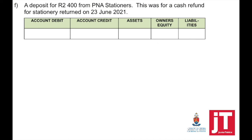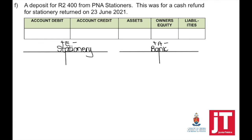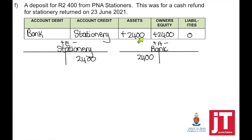Adjustment F — a deposit of $2,400 from P&A Stationers. This was for a cash refund for stationery returned on the 23rd of June 2021. This means that I need to open up bank and stationery. The business received money, so bank will be debited. Why did the business receive money? This was a cash refund for stationery that was returned. Account debited: bank. Account credited: stationery. Effect on the accounting equation: assets plus; because my expense decreases, it has a positive effect on the owner's equity.